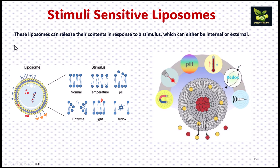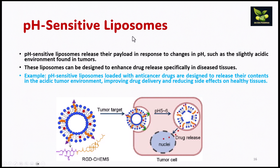Stimuli-sensitive liposomes respond to stimuli such as temperature, pH, enzyme, light, or redox reactions — when any stimulus is applied, the drug is released from these liposomes. pH-sensitive liposomes play an important role: for example, in acidic conditions at pH 5 to 6, the drug is released.